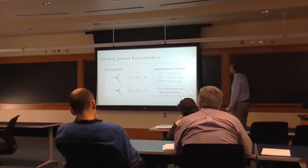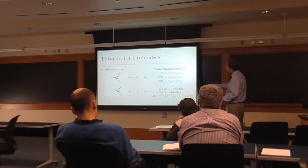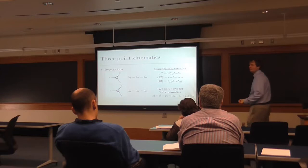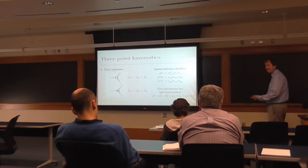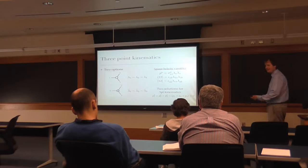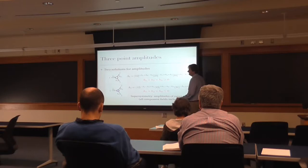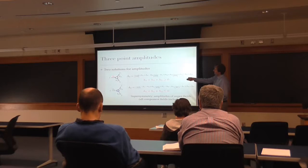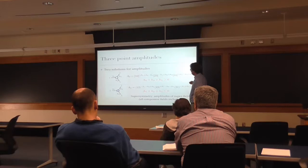If I use this formalism to solve momentum conservation at three points, I get two solutions: either all lambda spinors are proportional, or all lambda-tilde spinors are proportional. If I further impose that momenta are real, then lambda and lambda-tilde must be complex conjugates, and momentum conservation would force all of them to be proportional and hence zero. So for three-point real momenta there is no solution — we just don't have any three-point amplitudes in the real world. But in the complex world, which is a good idea for many reasons, there are two solutions.